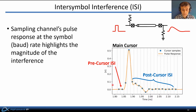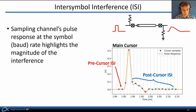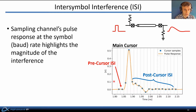The pulse response is the received waveform you get with a transmitted pulse that's rectangular in shape and exactly one symbol interval in duration, also sometimes called a baud interval or unit interval. Sampling the channel's pulse response at the symbol rate, as shown with the blue dots here, highlights the magnitude of the inter-symbol interference. The main cursor is the one around the main peak of the channel's pulse response; samples preceding the main cursor are called precursor ISI terms, and those following are post-cursor ISI terms.